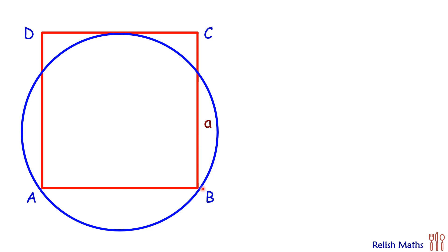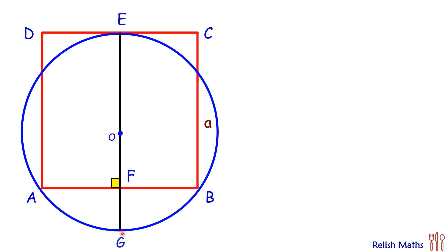To do this, we are drawing a perpendicular bisector of AB. AB is a chord, and the perpendicular bisector passes through the center of the circle, so this black line is also the diameter of the circle. Let's name these points: call them E, F, and G. Now AB is A, so AF will be A/2 and FB will be A/2.